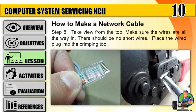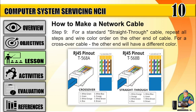Step 8: Take a view from the top. Make sure the wires are all the way in — there should be no short wires. Place the wired plug into the crimping tool. Step 9: For a standard straight-through cable, repeat all steps and wire color order on the other end of the cable. For a crossover cable, the other end will have a different color.